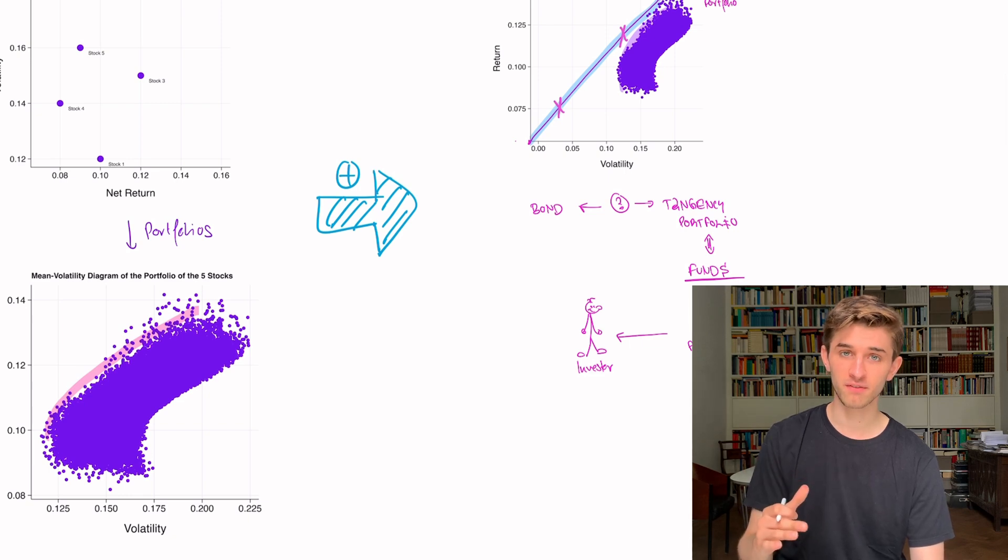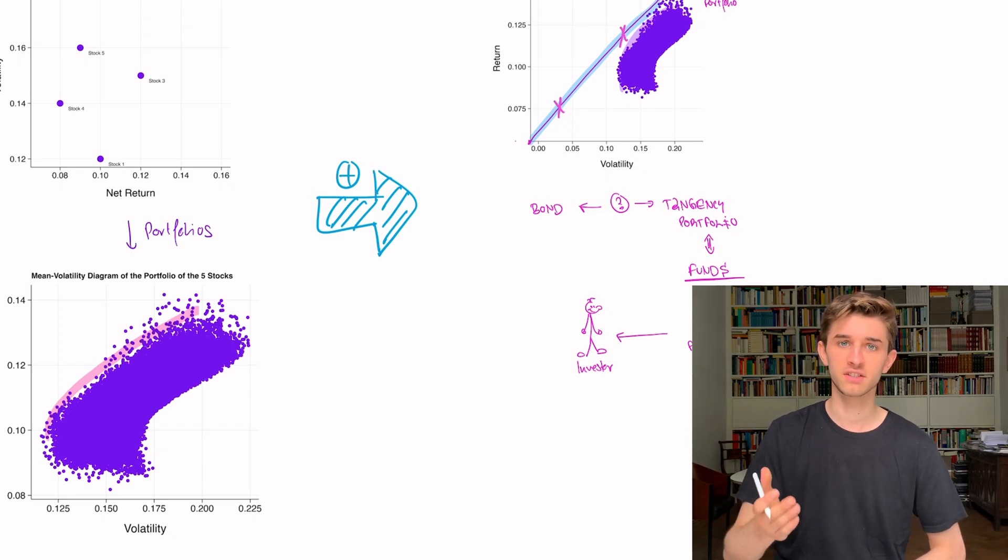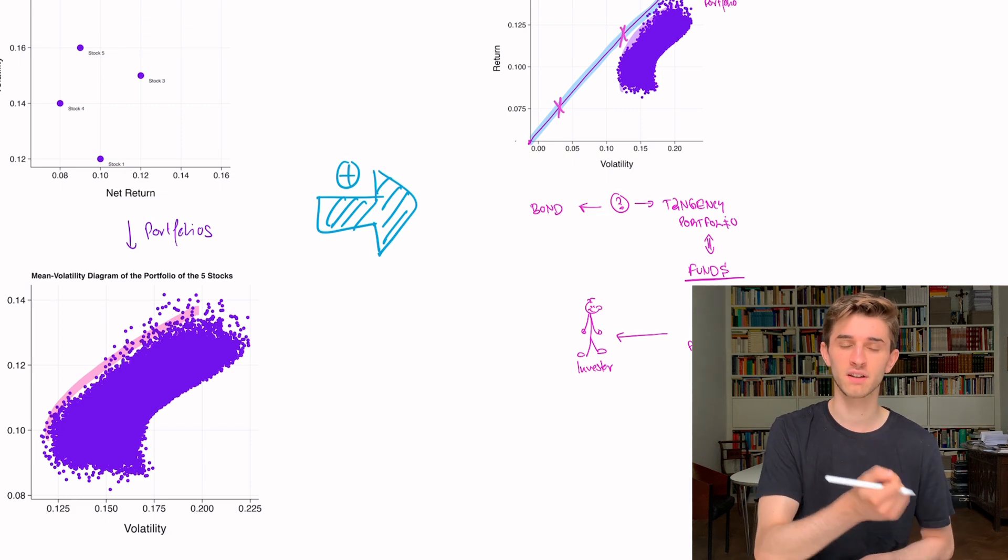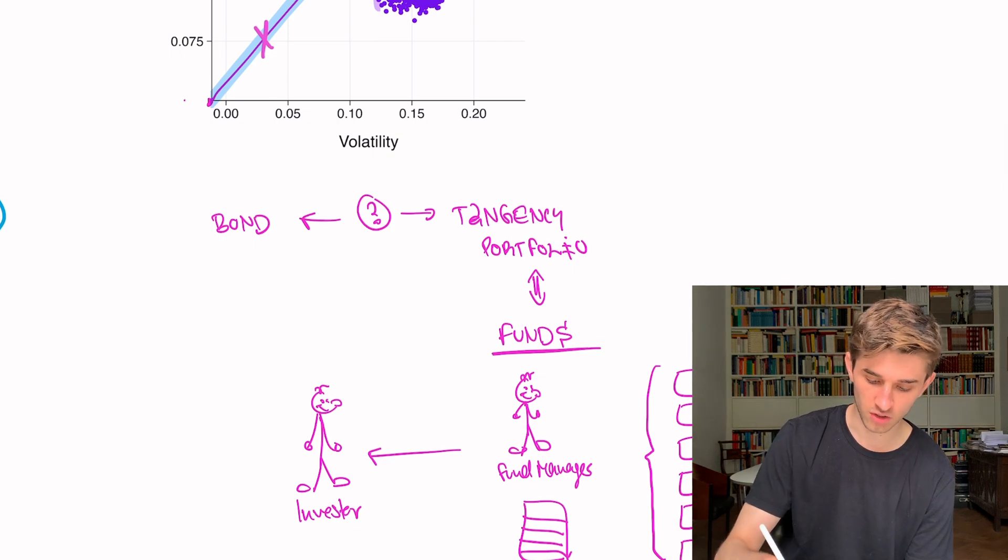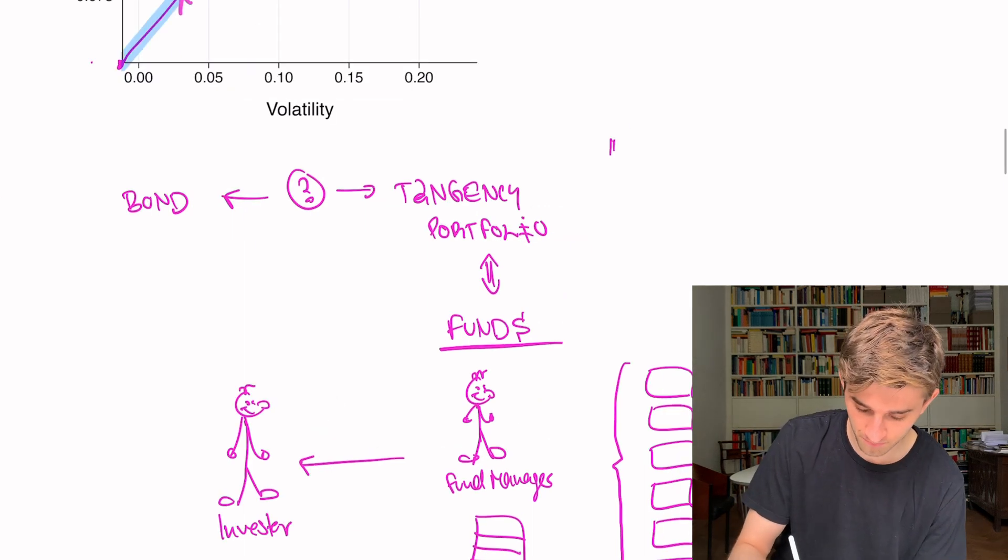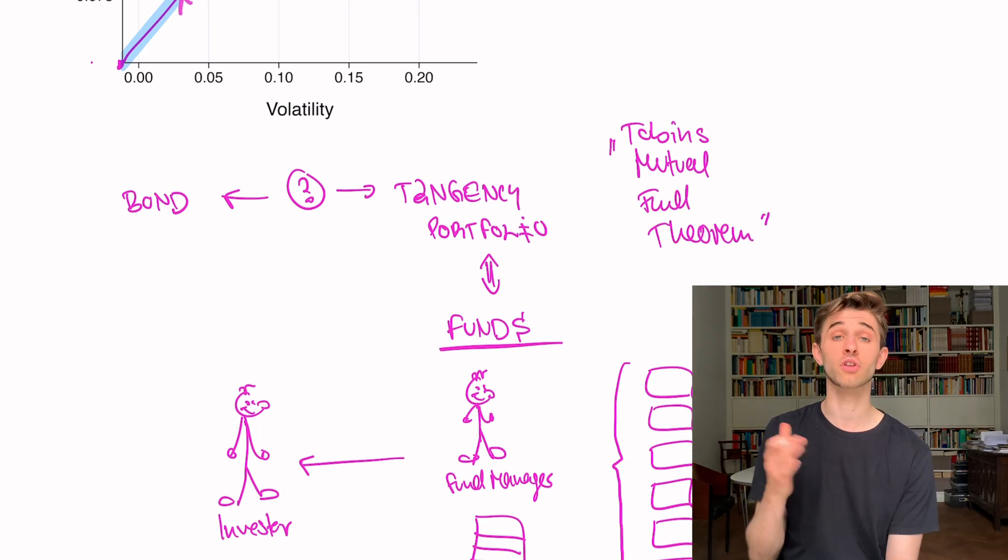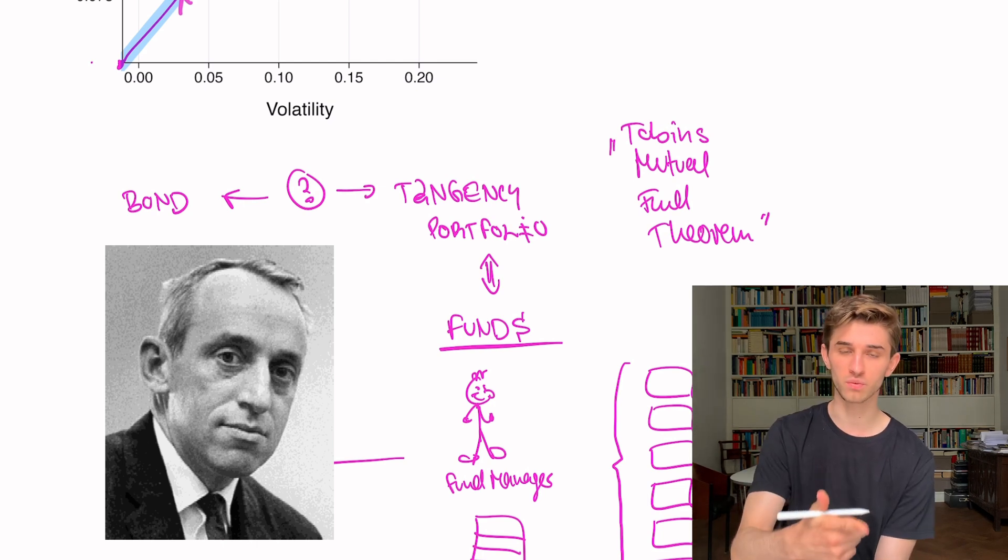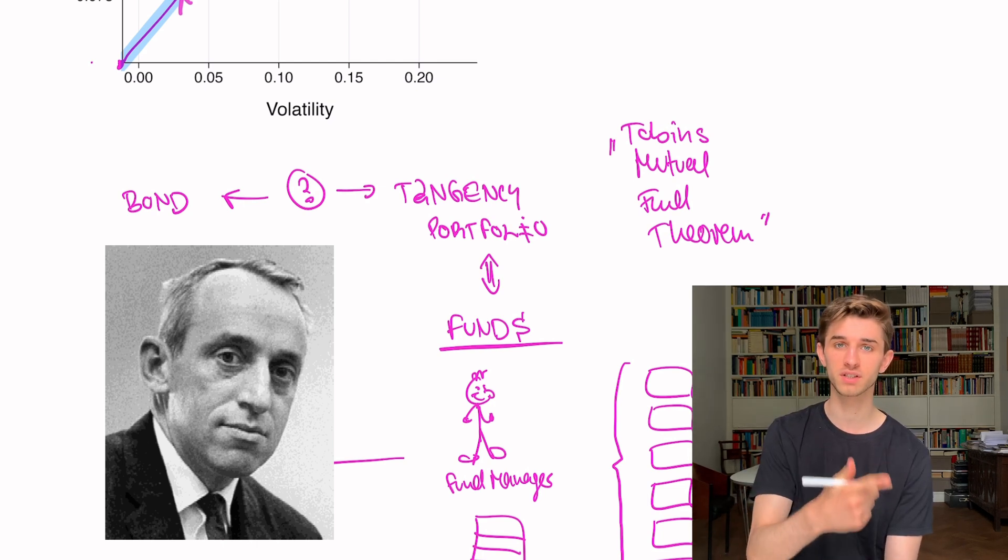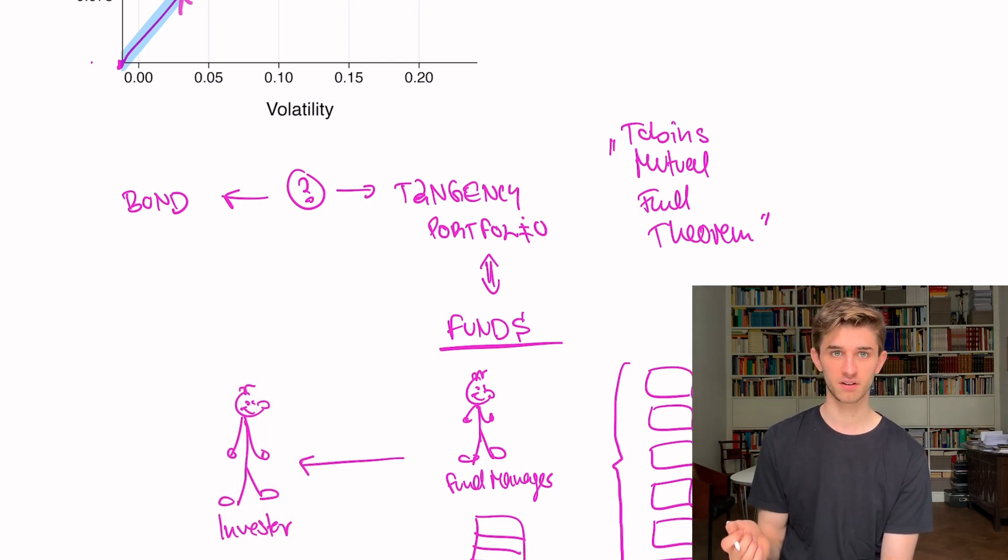Our investment decision, if there's a riskless asset and risky assets out there, is finding the tangency portfolio and then deciding how much money to put into the riskless asset and how much into the tangency portfolio. This is also known as Tobin's mutual fund theory, after Nobel prize winner James Tobin. This says when investing, we only need one fund and one riskless bond, and that will satisfy everybody. How much money you put in the fund and in the riskless bond depends on your level of risk aversion.